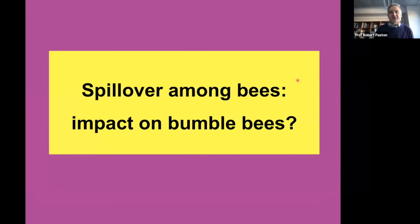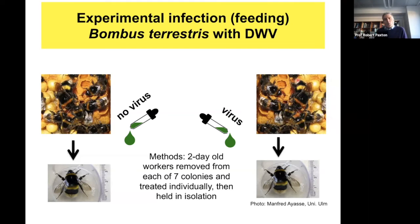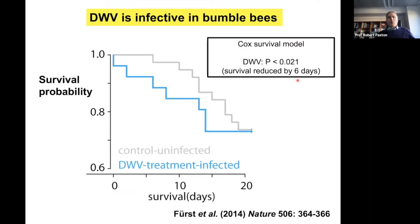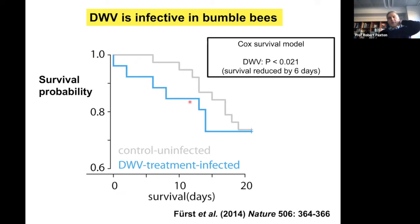What effect does spillover of deformed wing virus or black queen cell virus have for bumblebees? In a 2014 study by Fürst et al, we fed bumblebees virus extracted from honeybees — a mix of DWV genotypes A and B — and found that feeding bumblebees DWV in blue, compared to control solution in grey, led to markedly reduced survival, reduced by six days, suggesting that bumblebees may suffer when infected by a mixed DWV inoculum and that spillover may be having an effect.